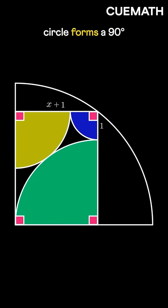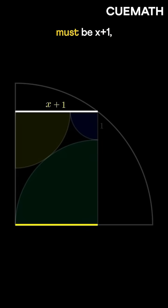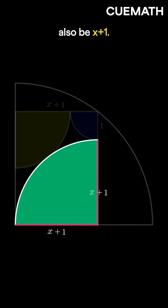Since each quarter circle forms a 90-degree angle, this must be a rectangle. So this length must be x plus 1, also the radius of the green quarter. So this will also be x plus 1.